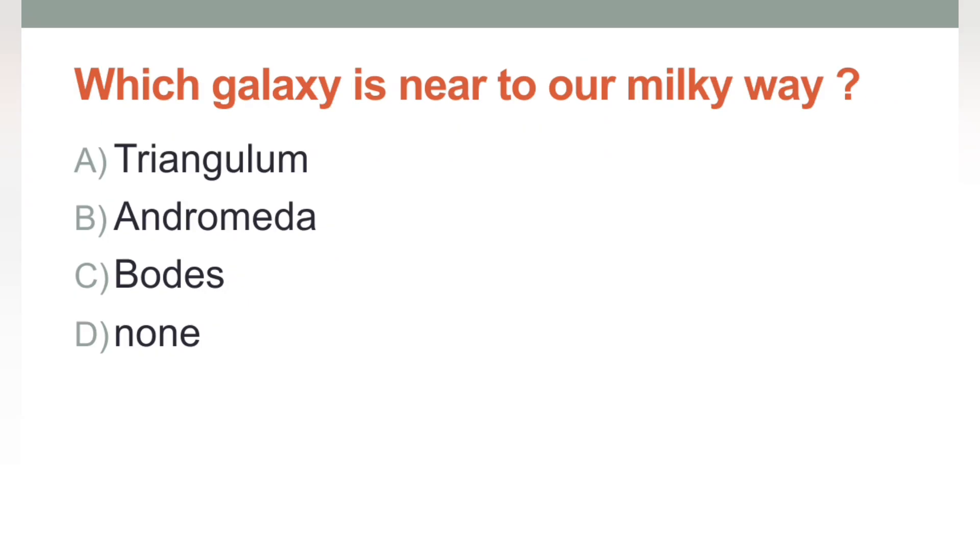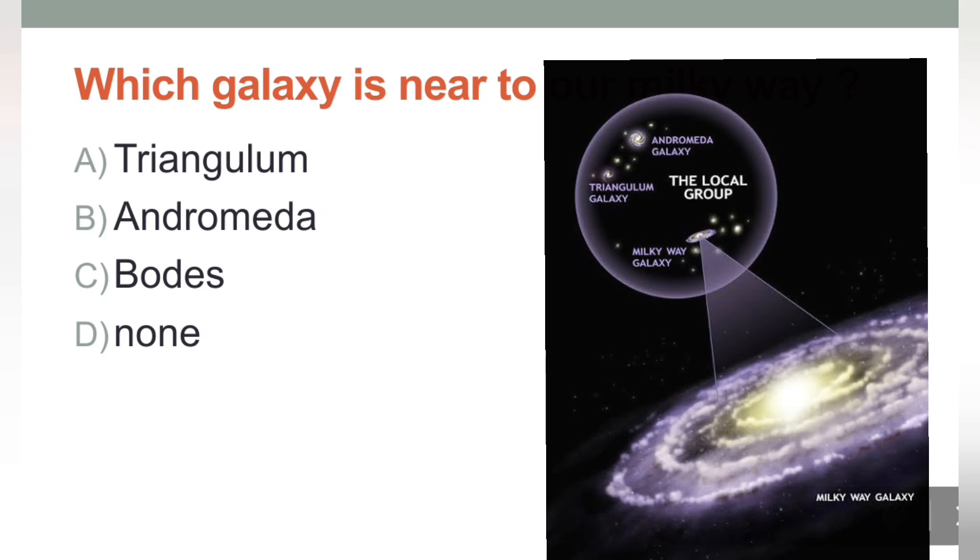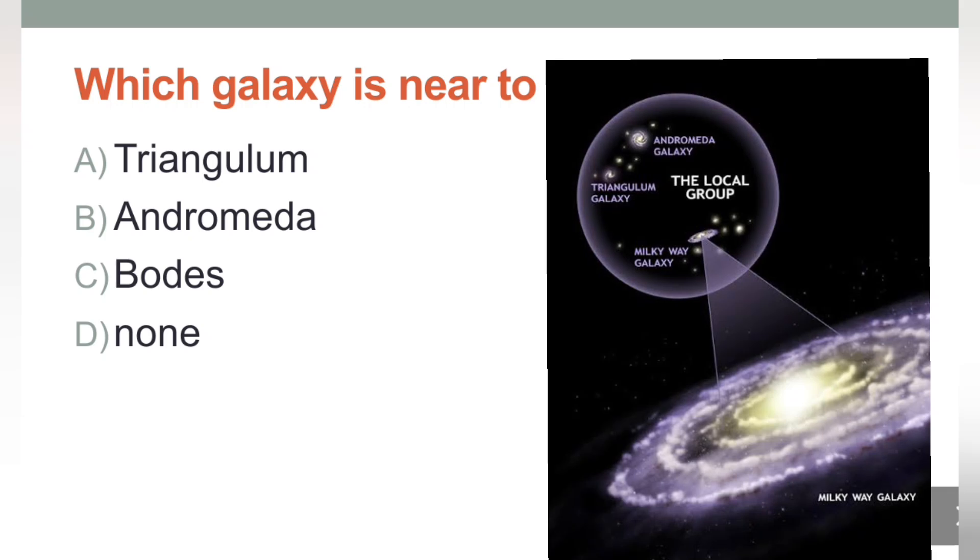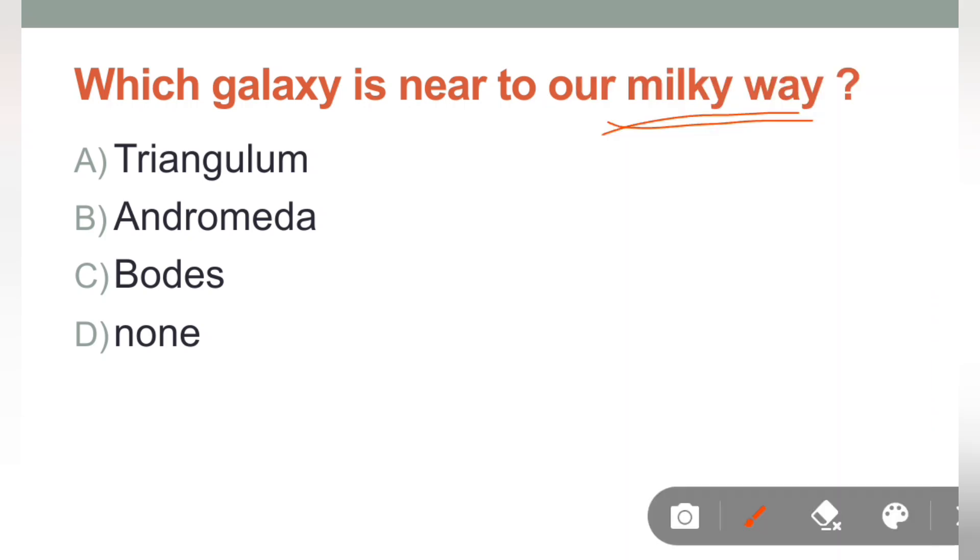Next is: Which galaxy is nearby to our Milky Way galaxy? This galaxy ka apna solar system part hai, that is Milky Way galaxy. Aur humare galaxy ke jo nearby galaxy hai, woh kaunsi hai? Ye aapse poocha hai. Iska jo correct answer hai, that is option B, Andromeda.